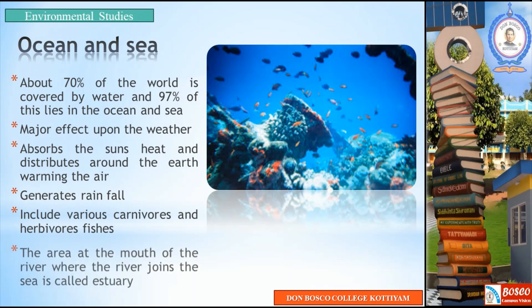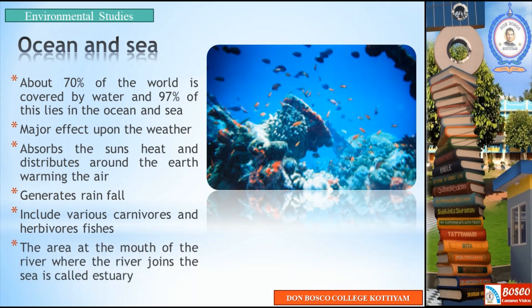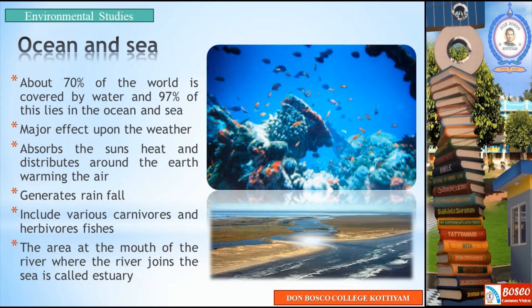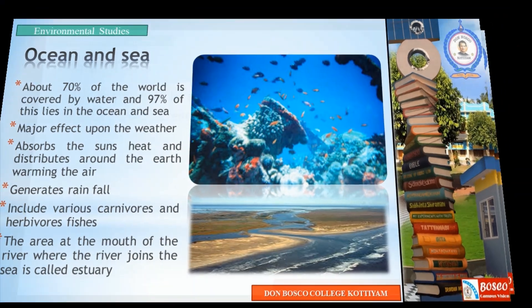The area at the mouth of the river, where the river joins the sea, is called an estuary. The estuary ecosystem is comparatively different from both the river and the sea ecosystems.